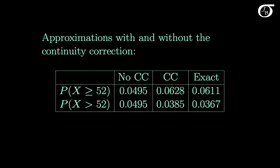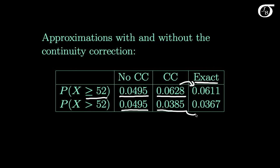Let's see how the continuity correction improved our approximation. For P(x ≥ 52), without the correction we got 0.0495, but with the correction we got 0.0628, which is much closer to the exact binomial value of 0.0611. Similarly for P(x > 52), without the correction we had 0.0495, but with the correction we get 0.0385, which is much closer to the exact binomial value. The continuity correction has greatly improved our approximation.